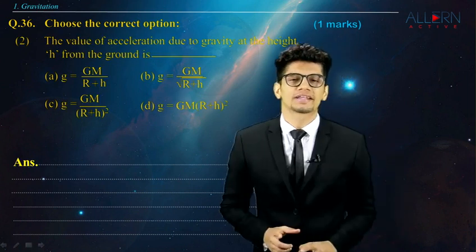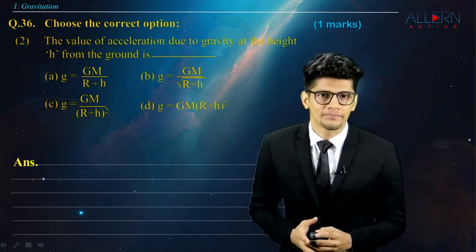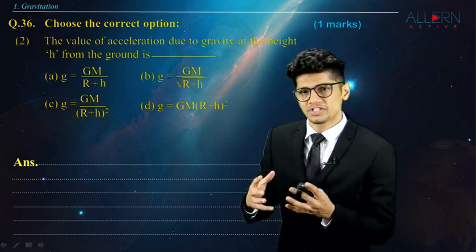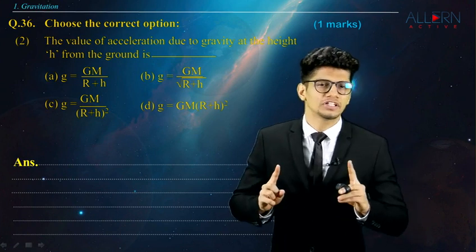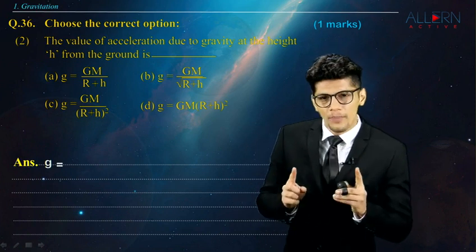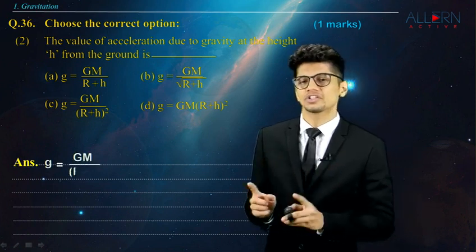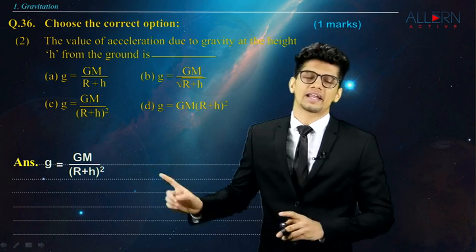Let's move on to the next question. The value of acceleration due to gravity at a height h from the ground is given by, we know that small g is nothing but capital G, capital M upon r plus h the whole square. So, this is the correct answer.